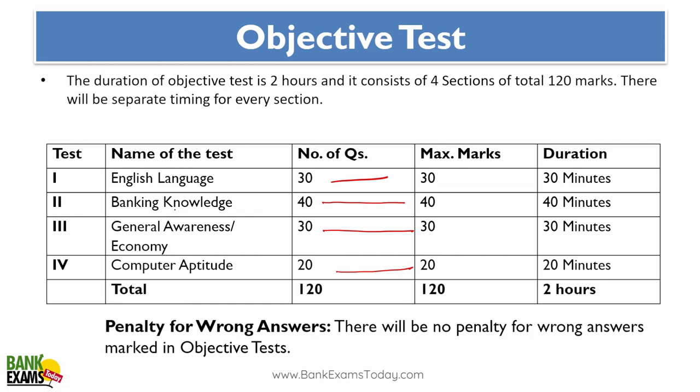Let's start with banking knowledge and general awareness. The syllabus of both is quite similar but there is a fine difference. General awareness and economy is more about current affairs and static GA. Banking knowledge is more about RBI circulars, RBI guidelines, some of the laws like SARFAESI Act, IBC, Negotiable Instruments, Banking Regulation Act, banking products, all the news related to banking, like Basel norms, priority sector lending — all those topics we are going to cover in banking knowledge.